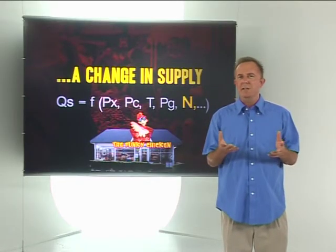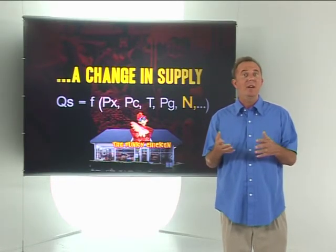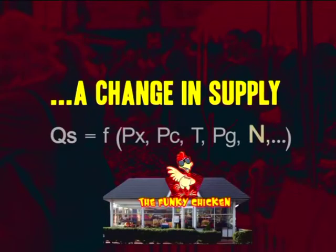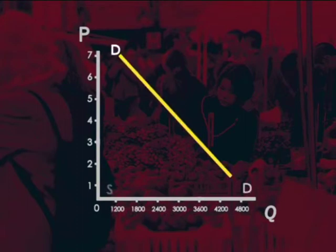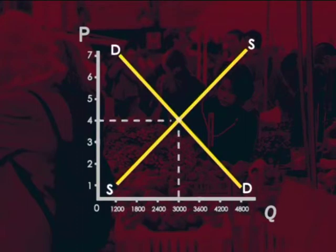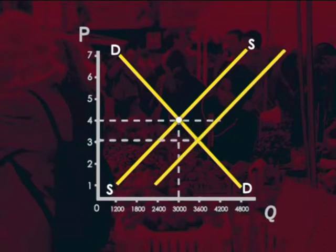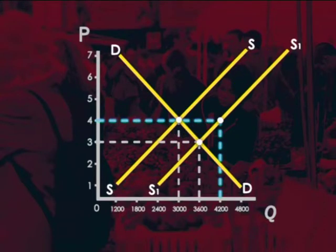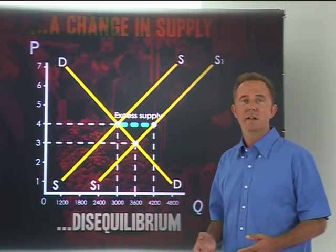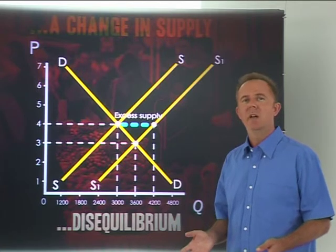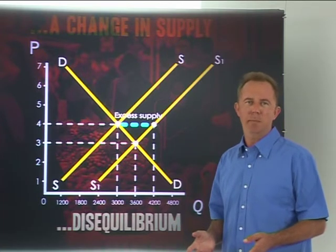Let's turn our attention to a change in supply. Assume there's an increase in the number of suppliers. With more businesses selling chicken, the supply curve shifts to the right. The quantity supplied at a price of 4 Rand might now be 4,200 pieces, but the quantity demanded is still only 3,000 pieces — nothing has caused a change in demand. We therefore have an excess supply in the market.